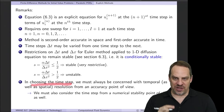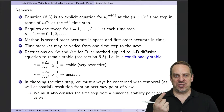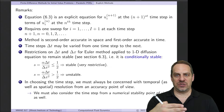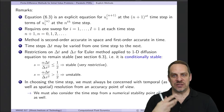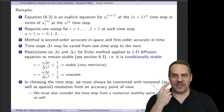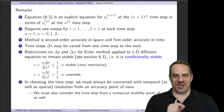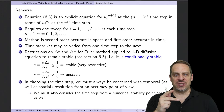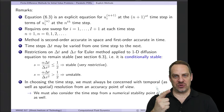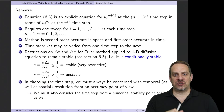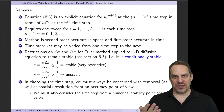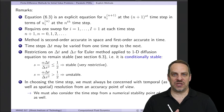In choosing the time step, there are two considerations: the time step must be small enough for temporal accuracy, and also small enough to maintain numerical stability. For explicit methods, the stability requirement is typically more stringent than the accuracy requirement. This restrictiveness motivates the development of implicit methods to mitigate these numerical stability issues.